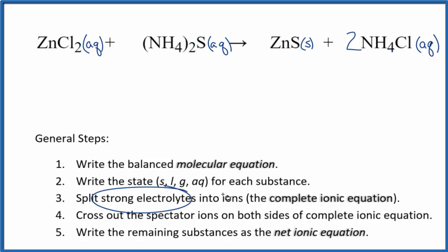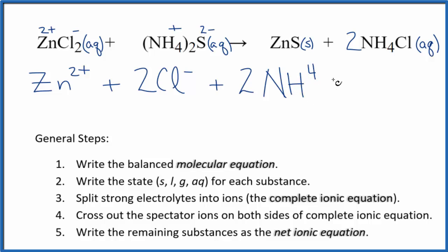Now we can split the strong electrolytes into their ions for the complete ionic equation. Zinc is always 2+, and the chloride ion is always 1-. So we have the zinc ion, and I won't write the states now, let's do that at the end. Two chloride ions, and the ammonium ion, this is a good one to remember, is 1+. So we have our ammonium ion. Sulfide is 2-. So two of these ammonium ions, NH4+, and then we have just the sulfide ion, S2-. And these are the reactants in our net ionic equation.